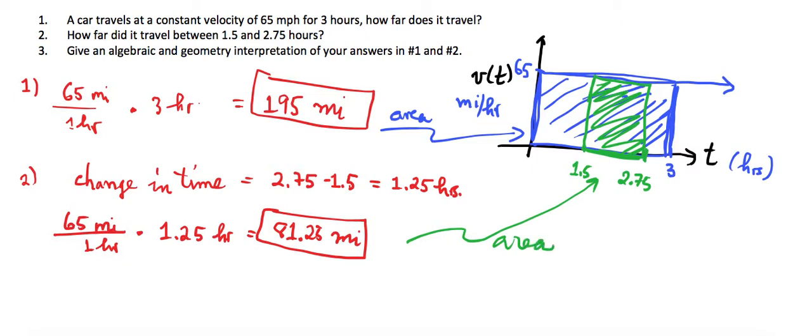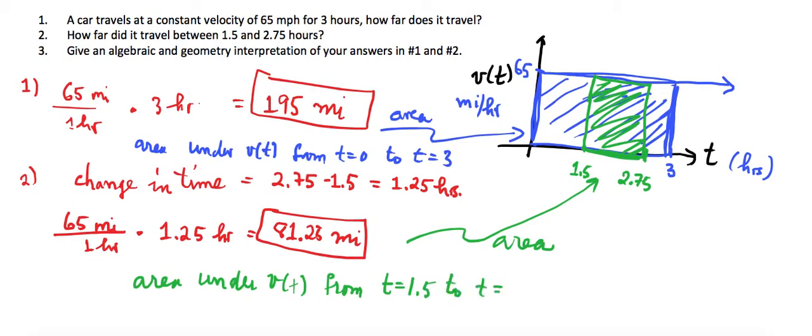So to recap, in number one, we are finding the area under v of t from t equals 0 to t equals 3. And in the second example, what we're doing here is kind of the same thing, the area under v of t, but two different intervals, from t equals 1.5 to t equals 2.75.